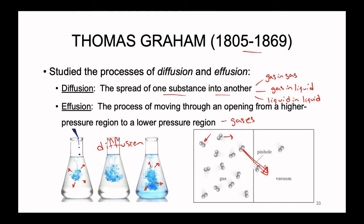The reason we define effusion as high pressure moving to low pressure simply has to do with the statistical likelihood of particles moving through the hole. If there are fewer particles on the right-hand side, there is a lower chance they'll find their way to the pinhole. On the left-hand side, more particles means more pressure, so they are more likely to find their way through that hole until pressure equilibrium is reached and there is no net motion from one side to the other.